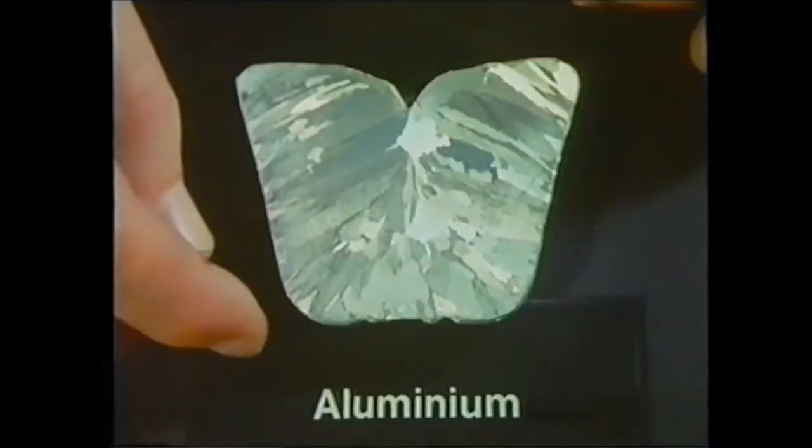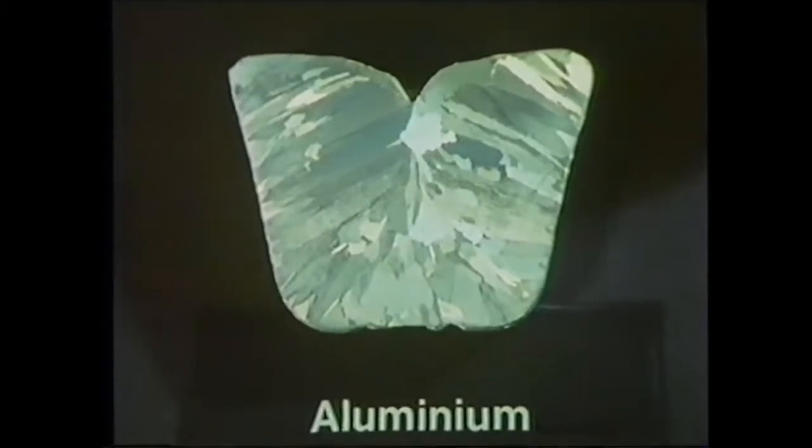By etching, we can reveal the grain structure of any metal. Here's a different sample of aluminium. In this case, the grains are much larger and they vary in size.